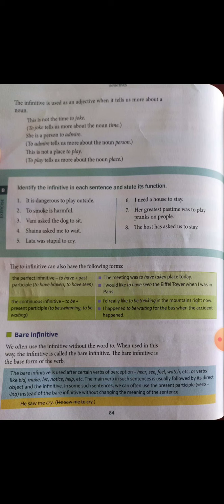The bare infinitive follows modal auxiliaries: shall, will, can, may, should, would, could, must, etc. Auxiliaries are of two types: primary and modal. Primary auxiliaries (is, am, are) change according to tense, person, and number, but modal auxiliaries do not change. Examples: 'You can play now,' 'I will pay the money,' 'We should go home,' 'They must study harder.'